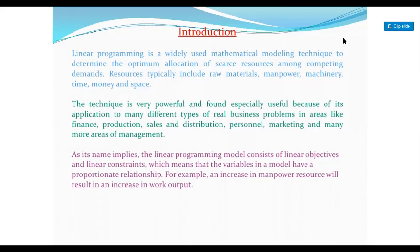The linear programming model consists of a linear objective and linear constraints, which means the variables in a model have a proportionate relationship. For example, an increase in manpower resource will result in an increase in work output.